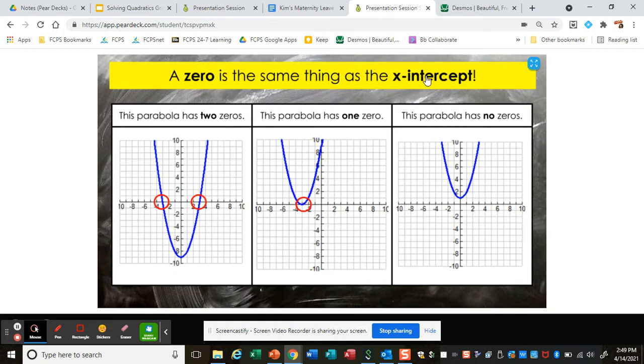A zero is the same thing as an x-intercept. You can see that there are two zeros here. This one has one zero. This one has no zeros. It doesn't cross the x-axis at all.